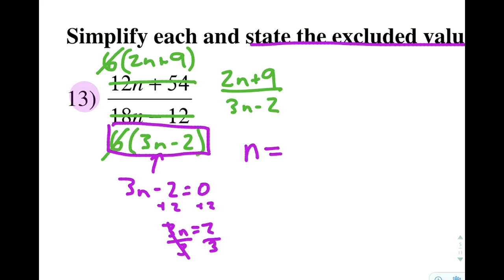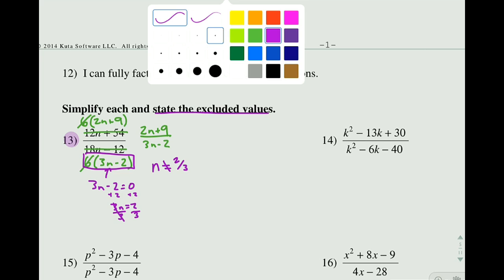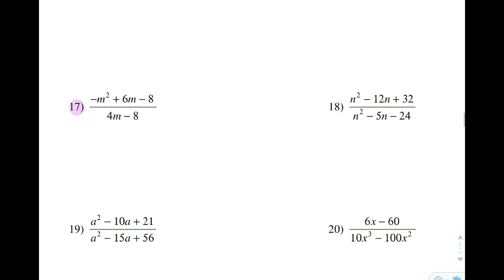So we would write that as n is not equal to 2 thirds. It is an excluded value, so it is not that. Moving down, we are going to do number 17.